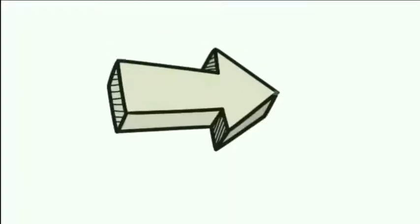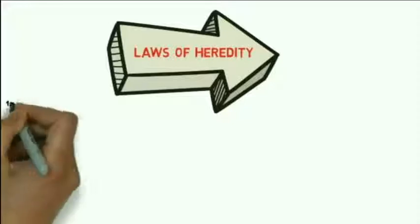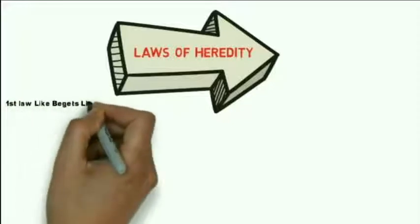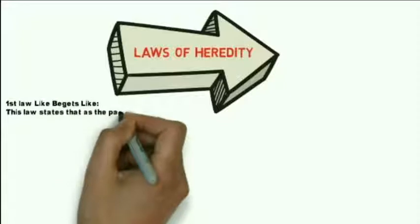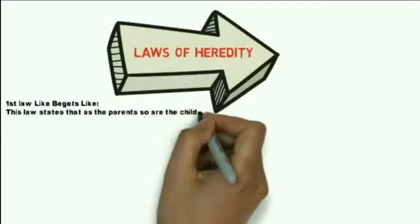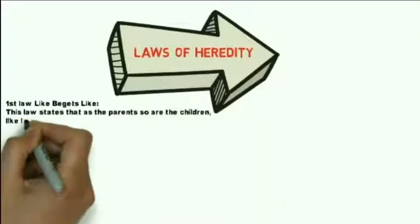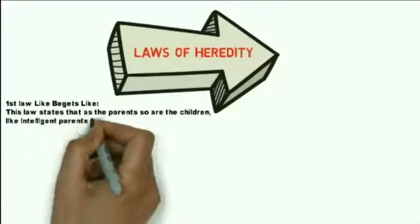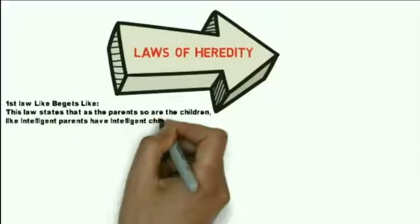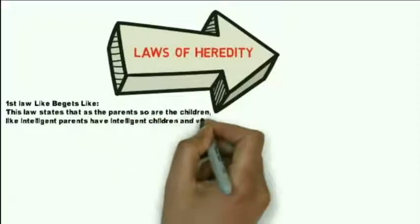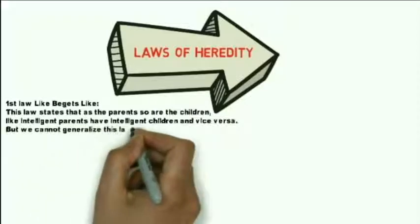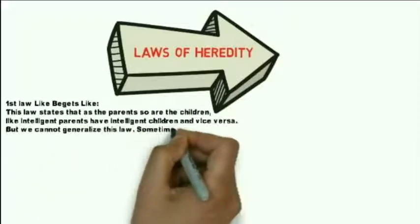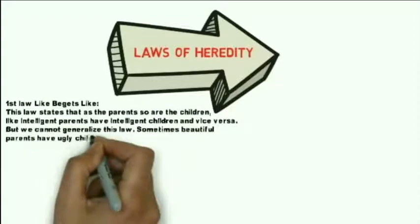Laws of Heredity. The first law is 'Like begets Like'. This law states that as the parents are, so are the children. For example, intelligent parents tend to have intelligent children, and vice versa. However, we cannot generalize this law — sometimes, beautiful parents might have less attractive children.